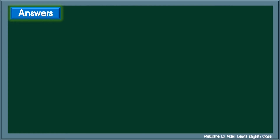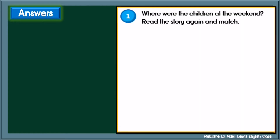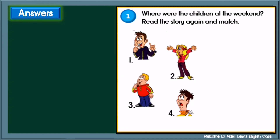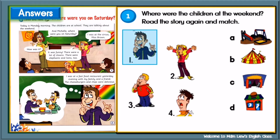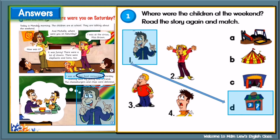Let's check the answers. Activity 1: Where were the children at the weekend? Read the story again and match. Number 1: I was at a fast food restaurant. Which picture is the fast food restaurant? Yes, D. Number 1: D — fast food restaurant.